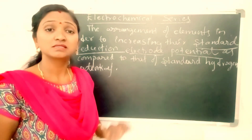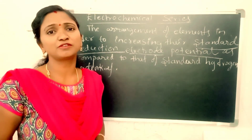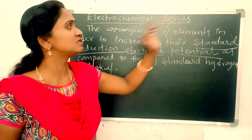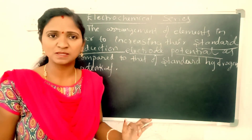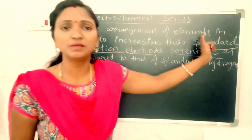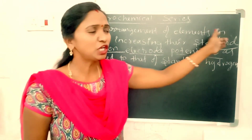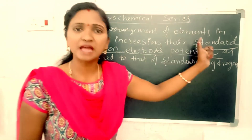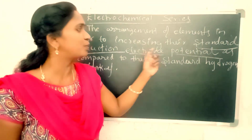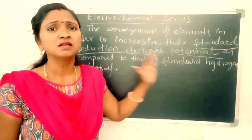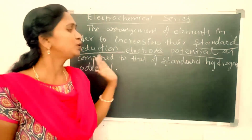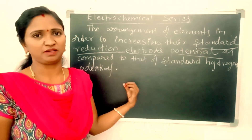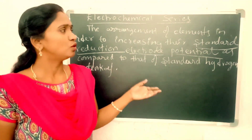Let us see the significance of electrochemical series. Once again: the electrochemical series is defined as the arrangement of elements in order of increasing their standard reduction electrode potential as compared to that of standard hydrogen potential.